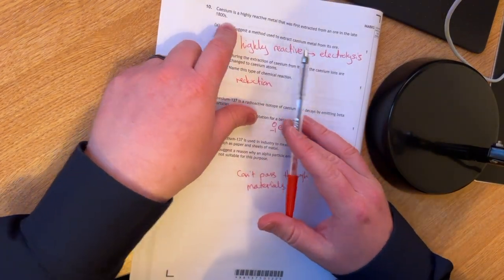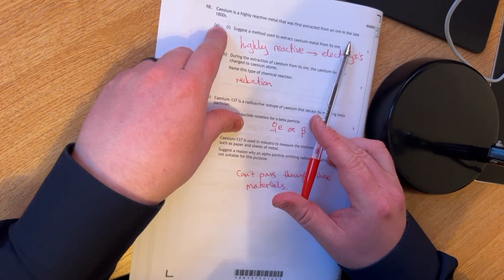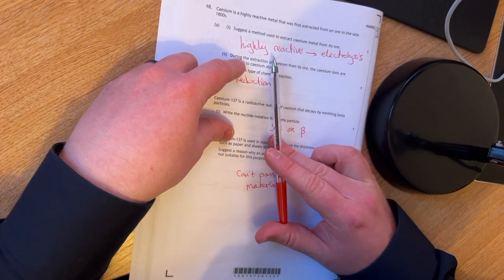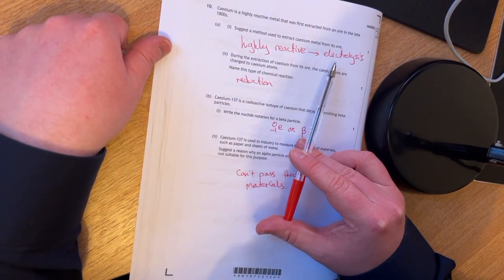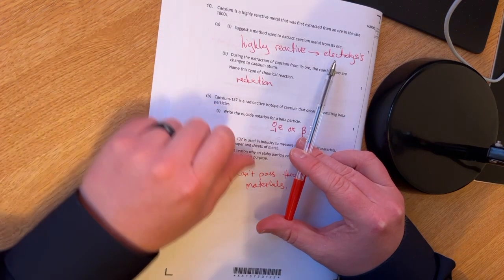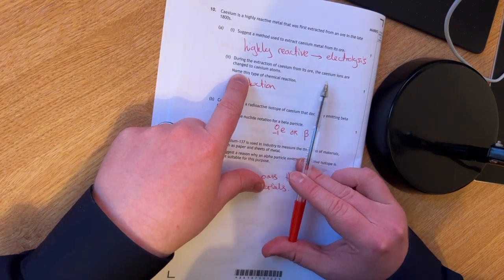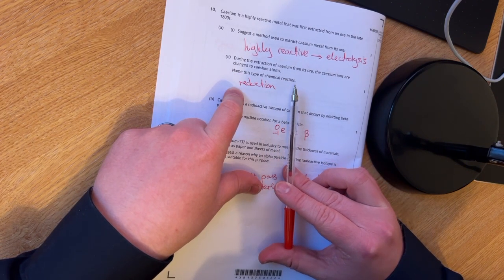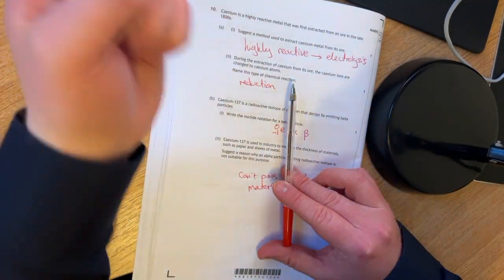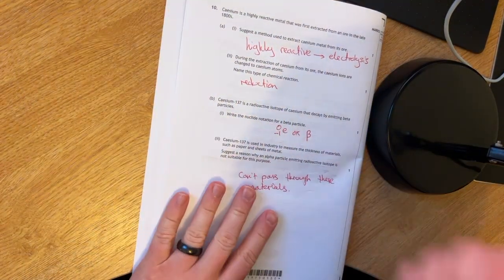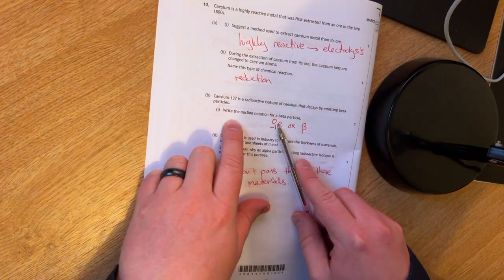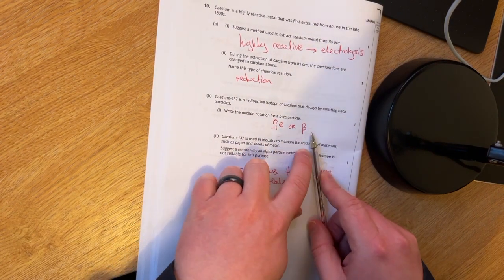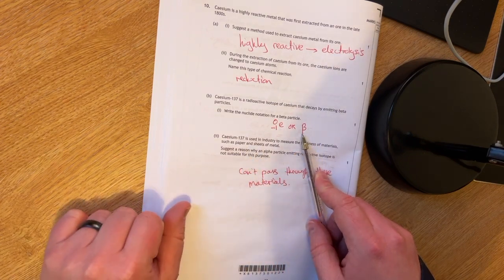Question ten. Cesium is a highly reactive metal that was first extracted from an ore in the late 1800s. Suggest a method used to extract cesium metal from its ore. I've gone that it's highly reactive and therefore you need to use electrolysis. During the extraction of cesium from its ore, the cesium ions are changed to cesium atoms. You have to name this type of chemical reaction. If you're going from ions to atoms, then you must be accepting electrons. So that's a reduction.